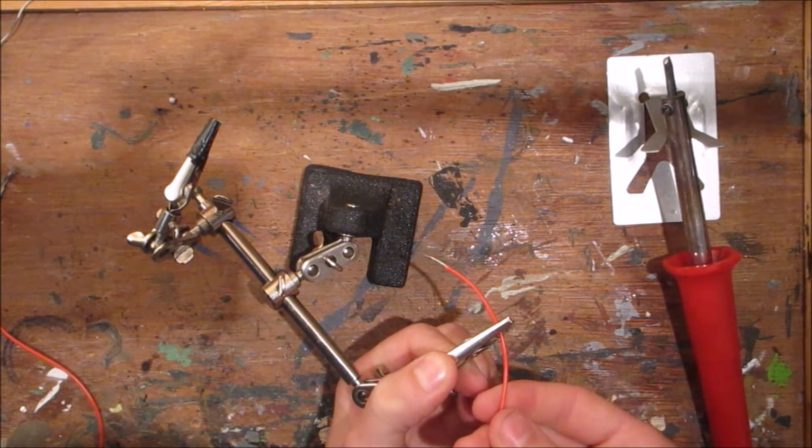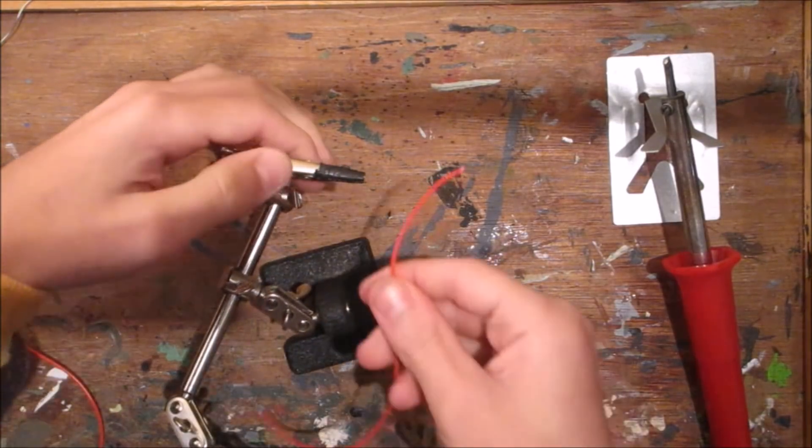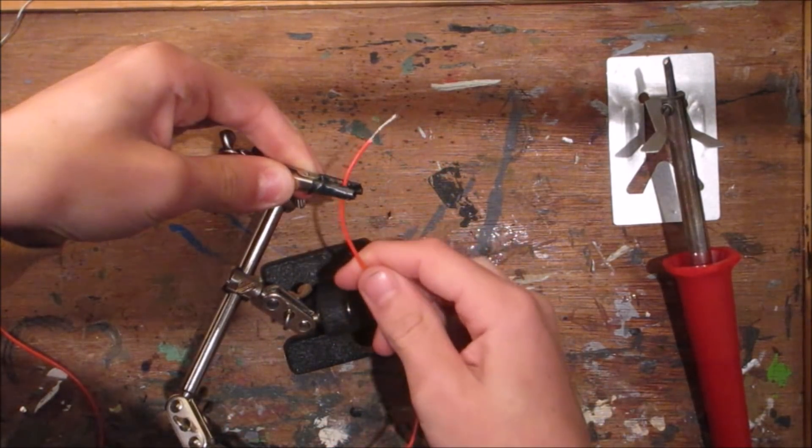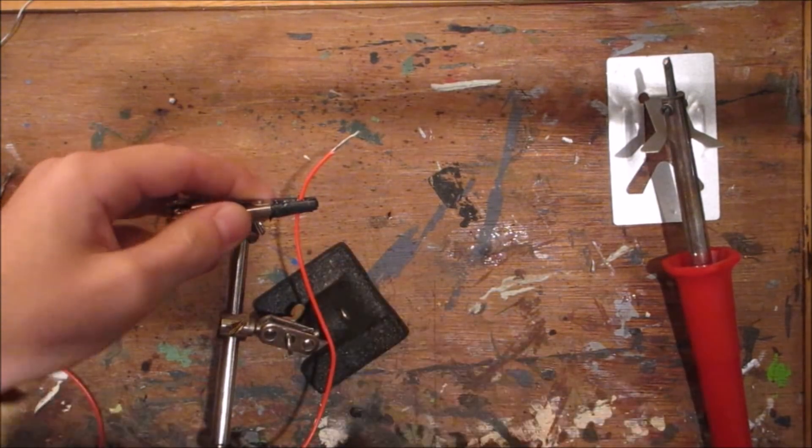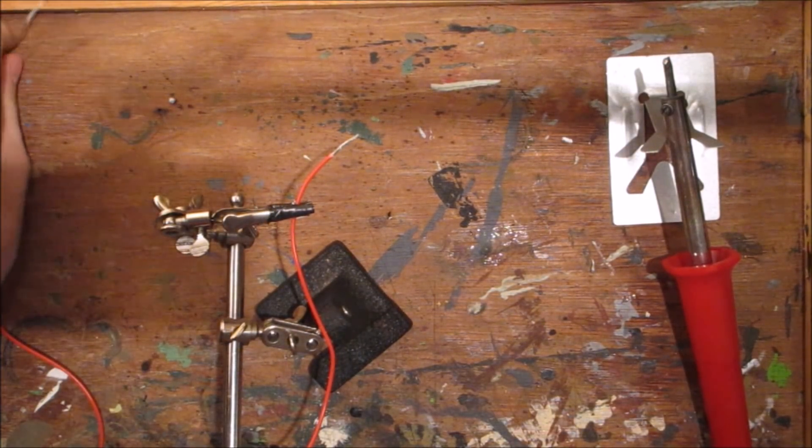And then put it in your alligator clips. Now what you can do is on one of mine I've put insulation tape. And that is because the alligator clips are sometimes quite sharp, so they cut through your wire.